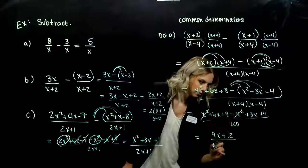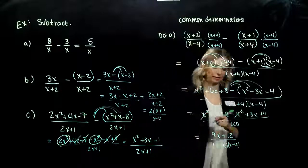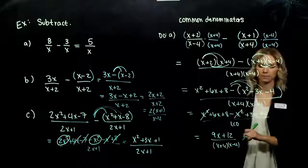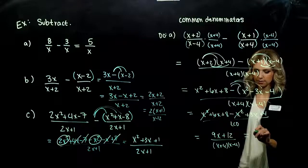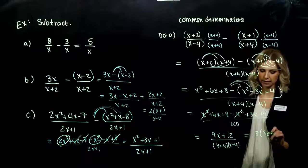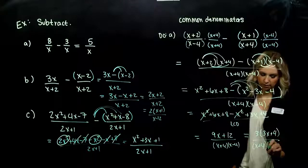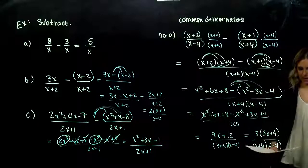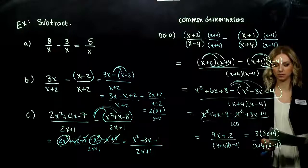That's all over x plus 4 times x minus 4. Can we factor that numerator — can we do any more work? Yes, the common factor we can take out is 3. When we do that, we're left with 3x plus 4 inside. We need to have it factored completely to look and see — is there anything common we can cancel top and bottom? No, they need to match exactly.